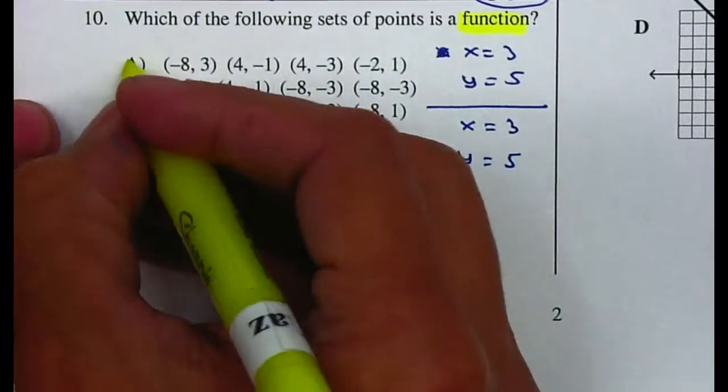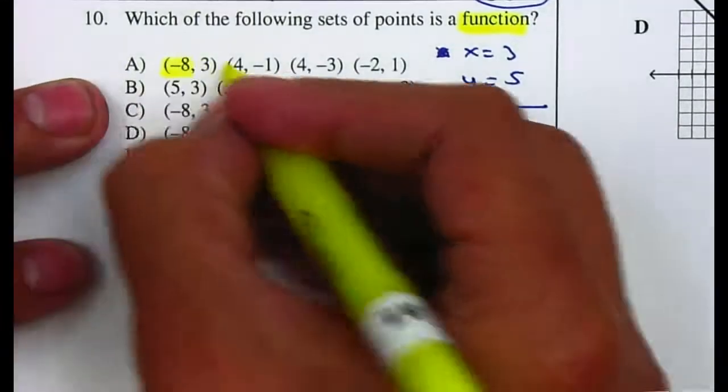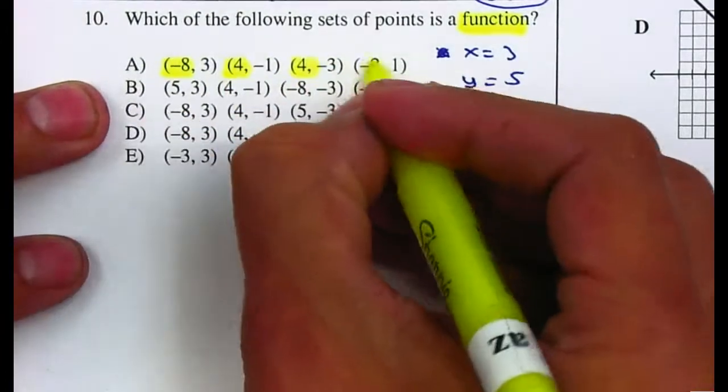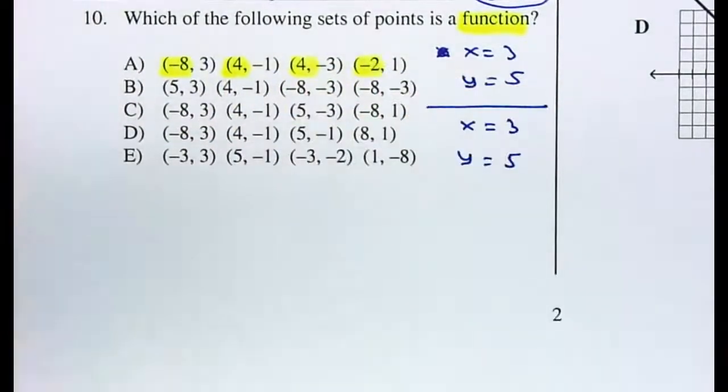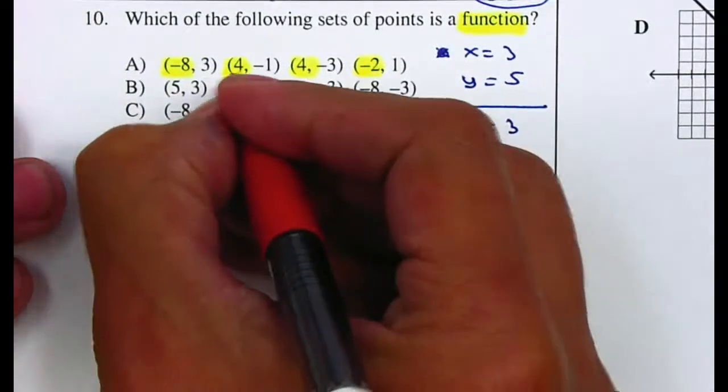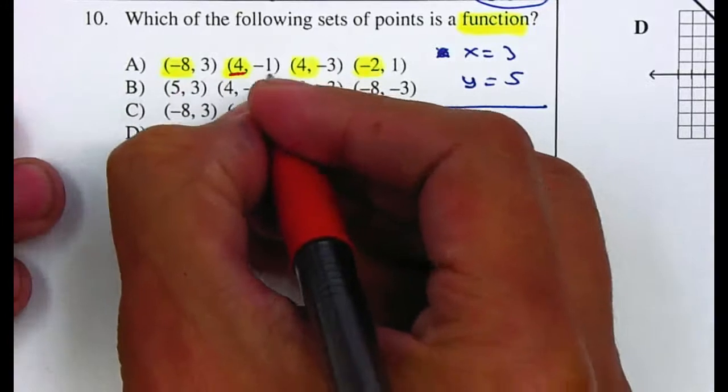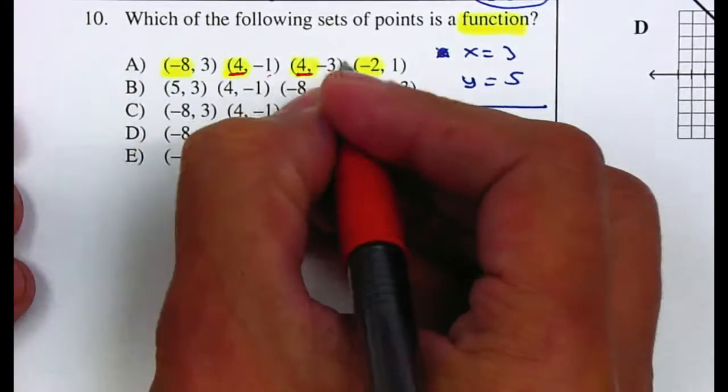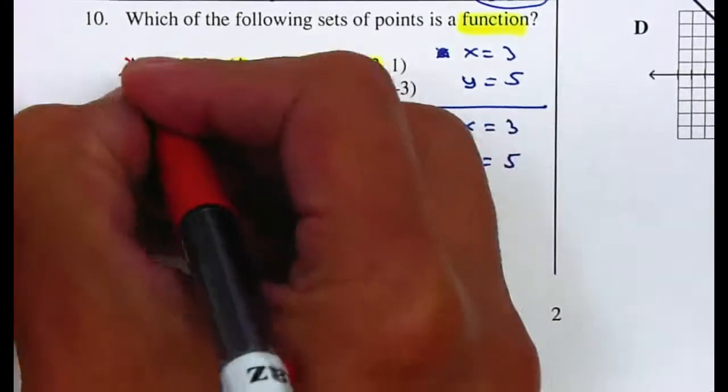So let's look at letter A. On letter A, we have a negative 8, a 4, a 4, and a negative 2. So in this case, you cannot plug in a 4, it gives you a negative 1, and then the next time you plug in a 4, it gives you a negative 3. So A is not a function.